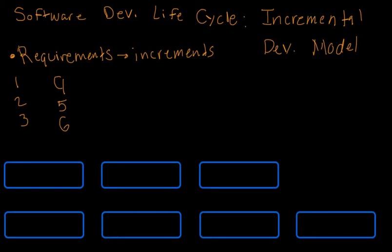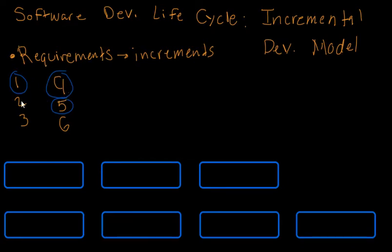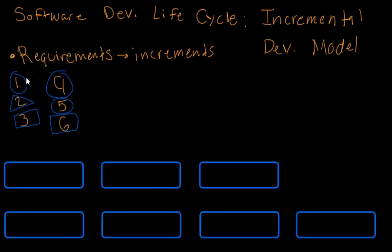Let's denote the high priority requirements with a circle — so requirements one, four, and five are your high priority requirements. Medium priorities are denoted with a triangle, so two is the only medium priority. Low priorities are denoted with squares. Now we have our requirement list sorted by priority.